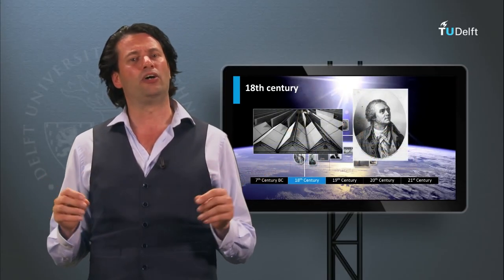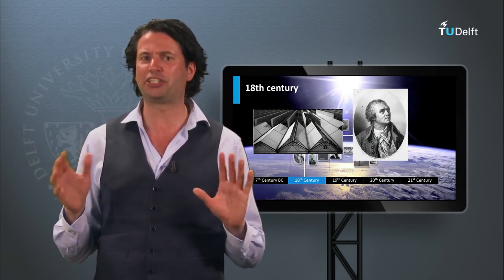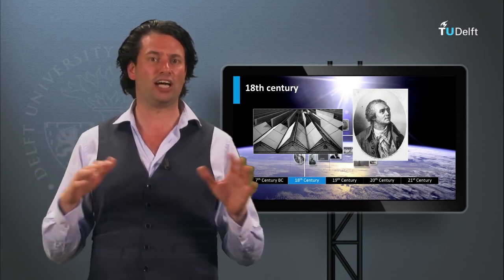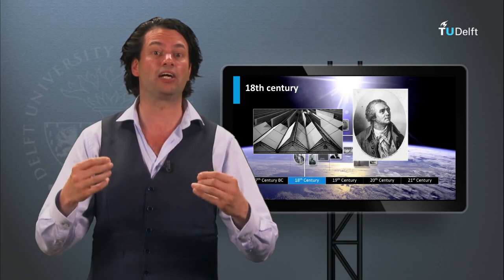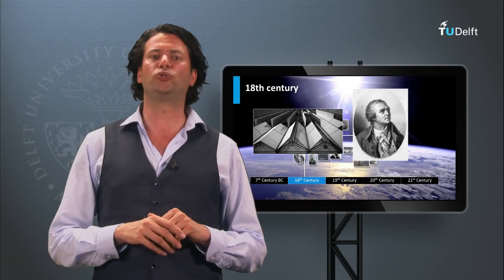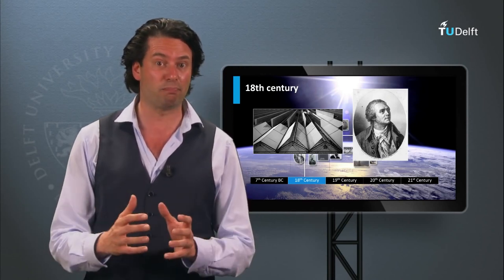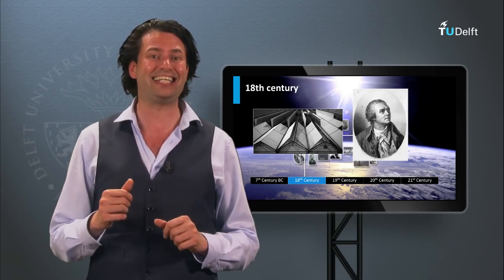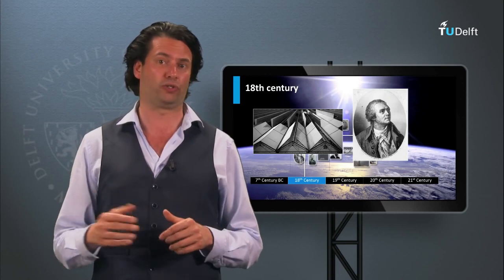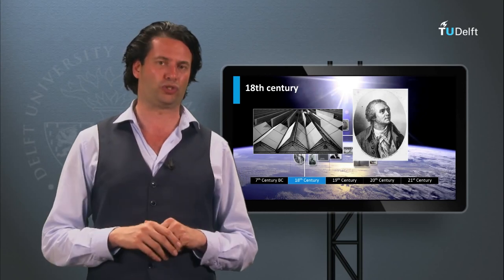In the 18th century, de Saussure built heat traps, which are a kind of miniature greenhouses. He constructed hot boxes consisting of a glass box with another bigger glass box, up to even 5 boxes. When exposed to direct solar irradiation, the temperature in the inner bottom box rose up to 108 degrees Celsius, warm enough to boil water and cook food. These boxes can be considered as the world's first solar collectors.